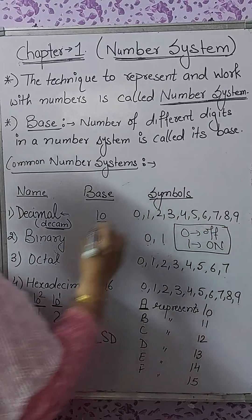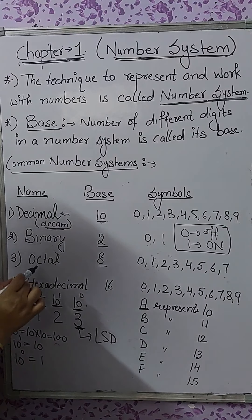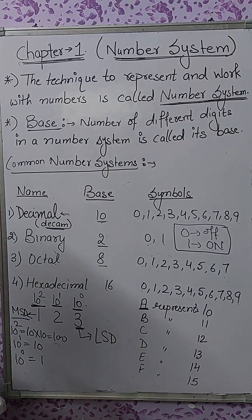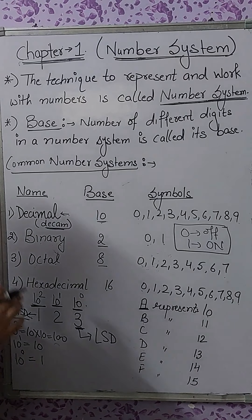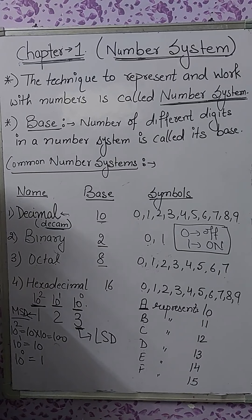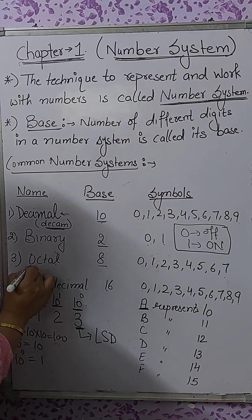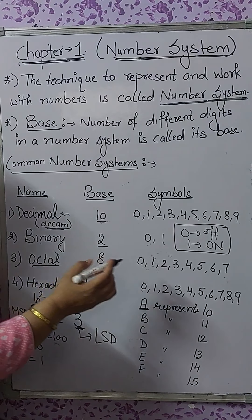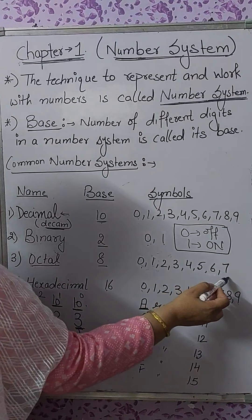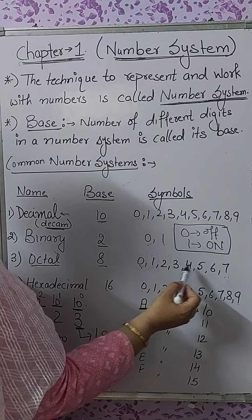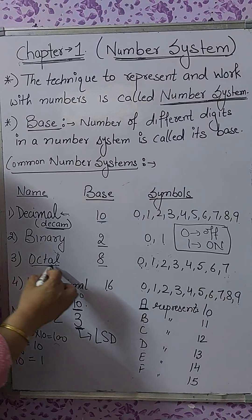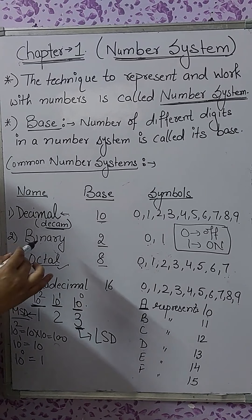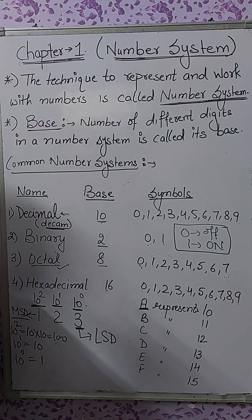The next number system is the octal number system. It is derived from the Latin word 'octo', meaning 8. That is where the name octal number system comes from. It uses 8 different digits: 0, 1, 2, 3, 4, 5, 6, and 7. It is also a positional number system, where the value of any digit depends upon its place plus its face value.